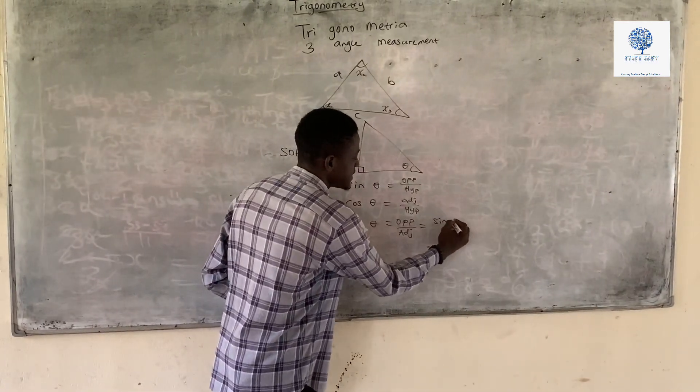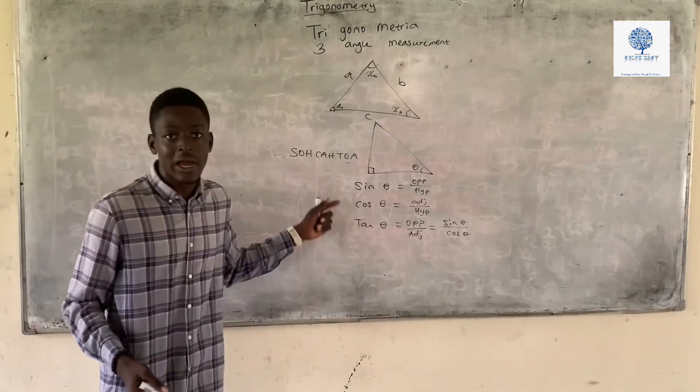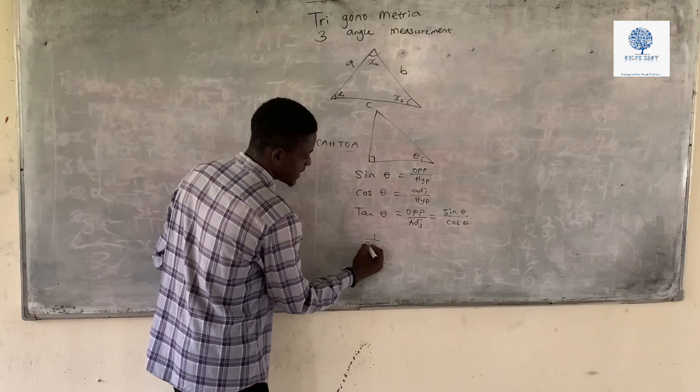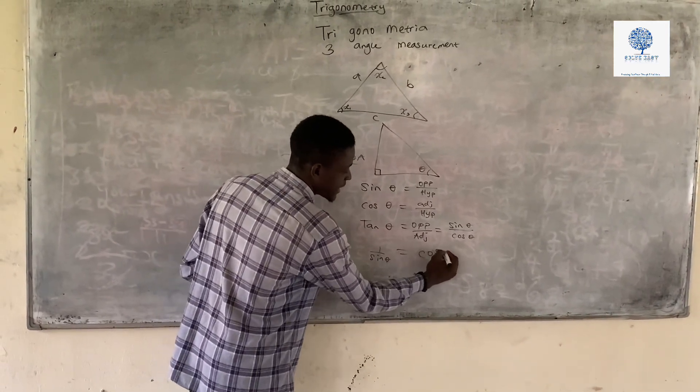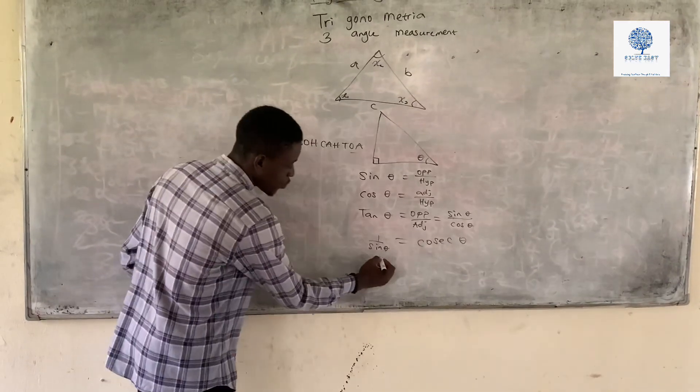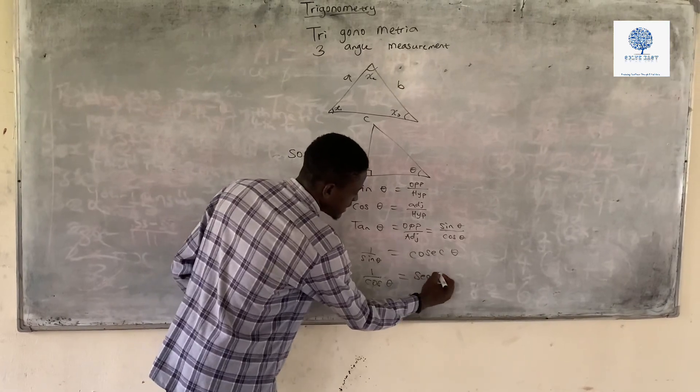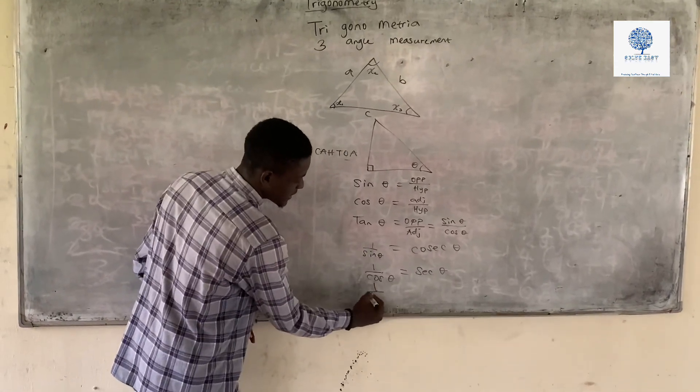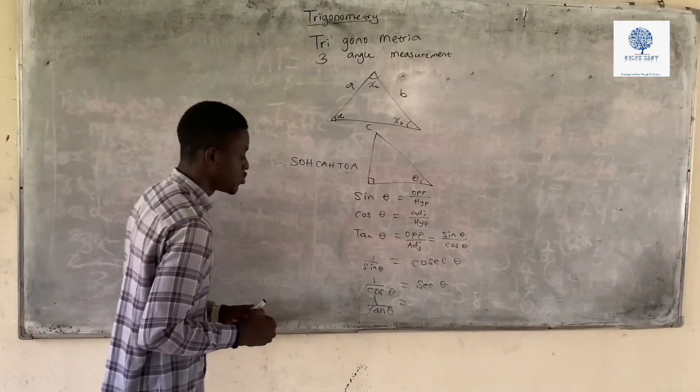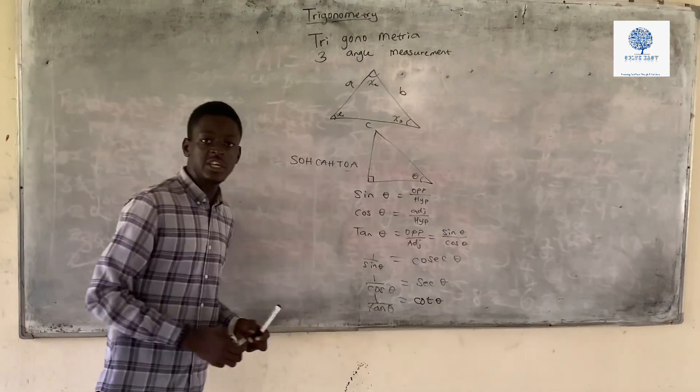We also have reciprocals of each of these trigonometric ratios. We have 1 over sin theta which is known as cosec theta, meaning complement of sec. We have 1 over cos theta which is equal to sec theta. And we also have 1 over tan theta which is equal to cot theta.